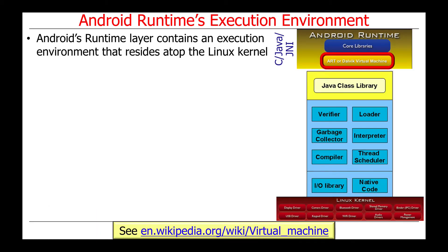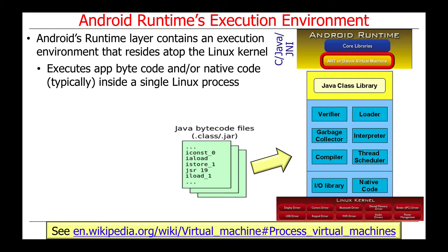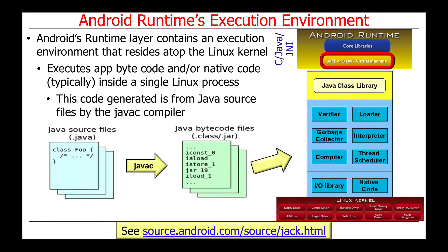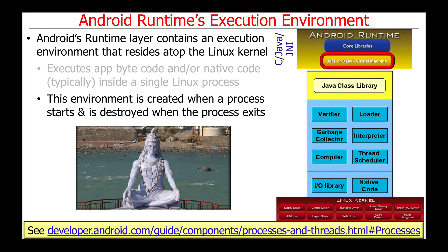The Android Runtime layer contains an execution environment that resides atop the Android Linux kernel. This allows the execution of application bytecode and/or native code inside of a single Linux process. The code that runs here is generated typically from Java source files by the Java C compiler, although, as we'll see later, Android is also increasingly supporting the use of other languages, such as Kotlin.